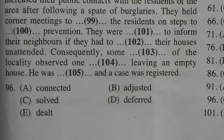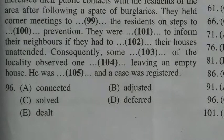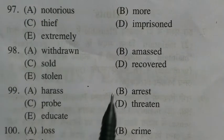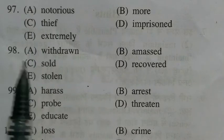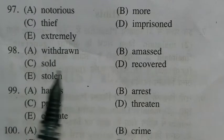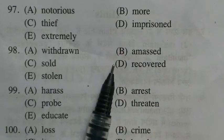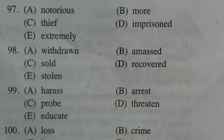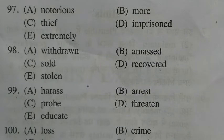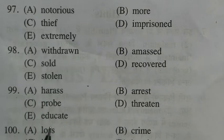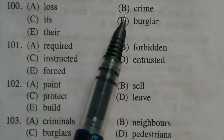The answer to question 96 is C: four cases of burglary have been 'solved.' The answer to question 97 is A: with the arrest of one 'notorious' criminal. The answer to question 98 is D: the police have 'recovered' gold and silver jewelry from him. The answer to question 99 is E: they held corner meetings to 'educate' the residents. The answer to question 100 is B: on steps to crime prevention.